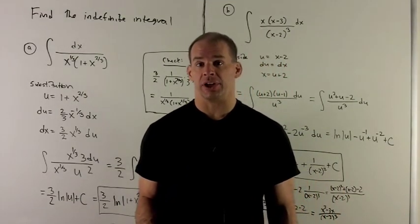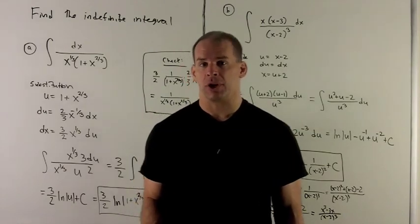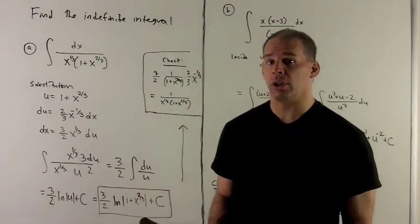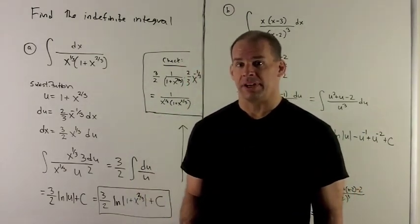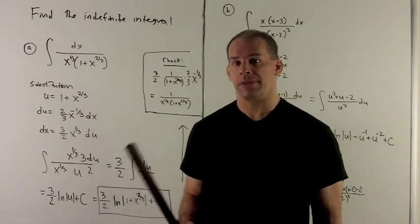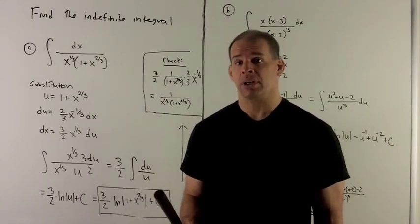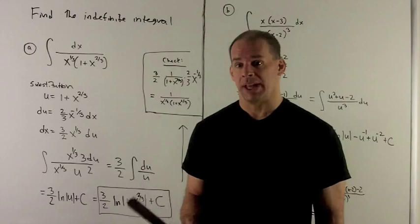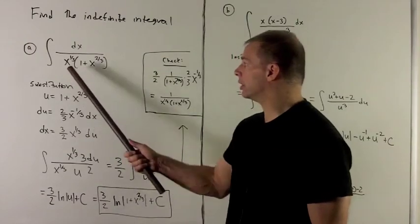I'm going to find two indefinite integrals. For my first indefinite integral, we're going to take the indefinite integral of 1 over x to the 1/3 times 1 plus x to the 2/3.